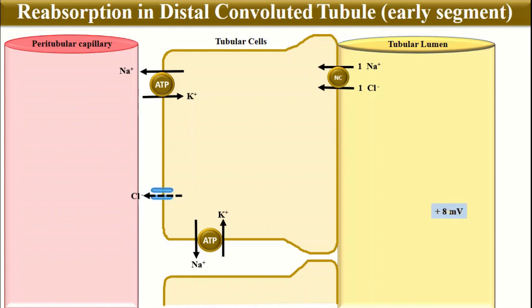As in the ascending limb of the loop of Henle, the secretion of potassium into the tubular lumen leads to the development of electropositivity inside the tubular lumen. This electropositivity drives the paracellular reabsorption of magnesium, calcium, and sodium into the interstitium. So there is reabsorption of sodium chloride, magnesium, and calcium from the early segments of the distal convoluted tubule.